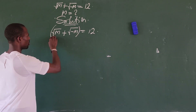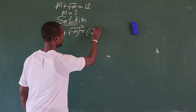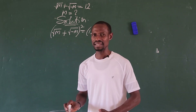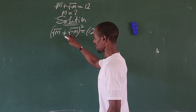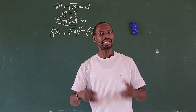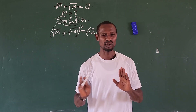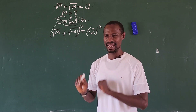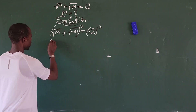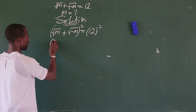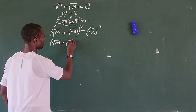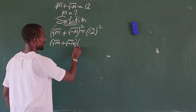Without moving either term to the other side, we want to square the entire left-hand side of the equation directly. This approach is quicker and easier. So when we square, we write: bracket, square root of m plus the square root of minus m, close bracket, times bracket, square root of m plus the square root of minus m, close bracket.